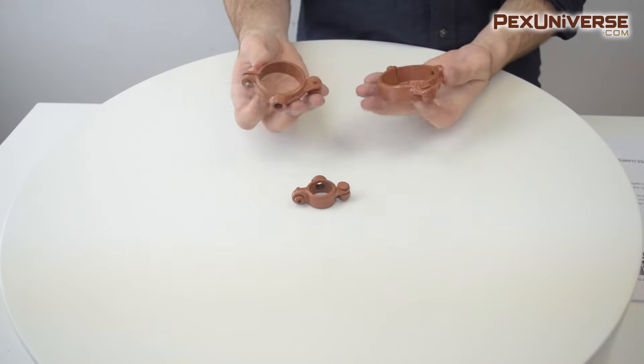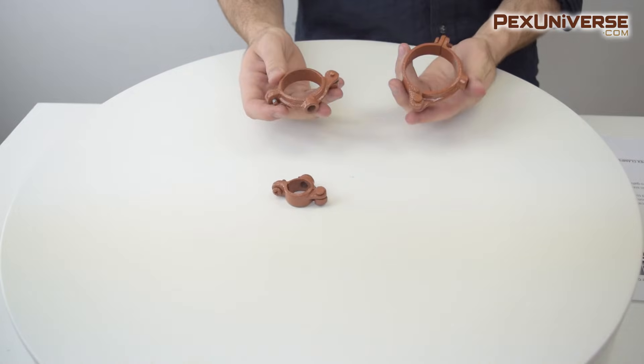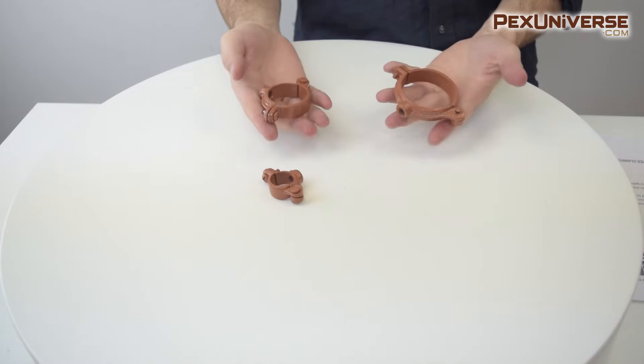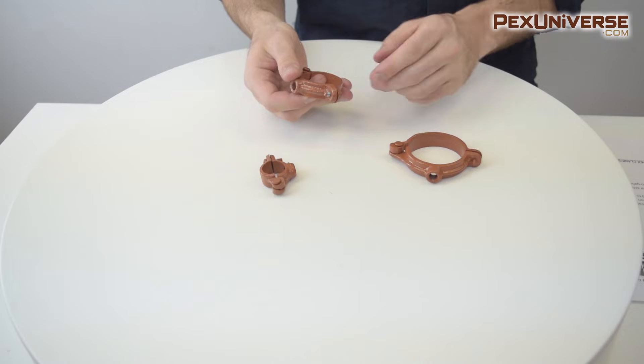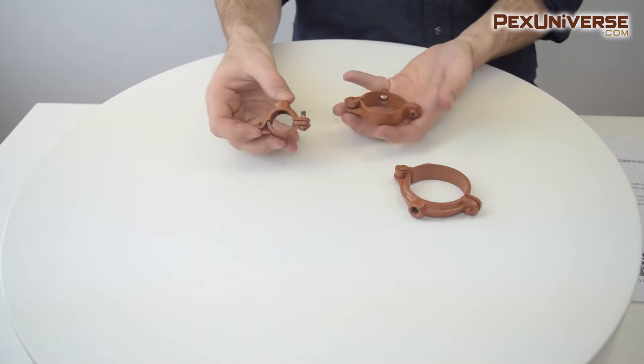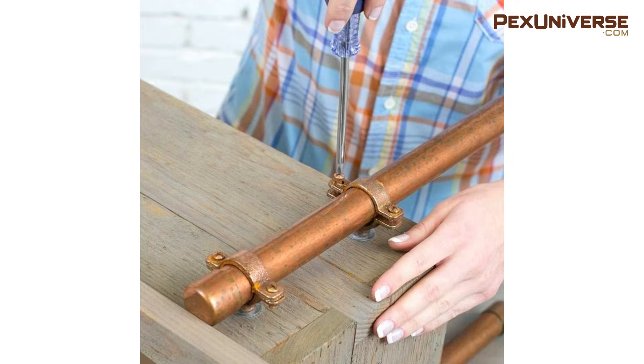Split ring hangers support vertical or horizontal pipe runs. They're used in combination with threaded rod and accessories to be attached to the wall, ceiling or beam. These come in sizes from 3/8 of an inch to 4 inches and in copper, plain or electro galvanized.